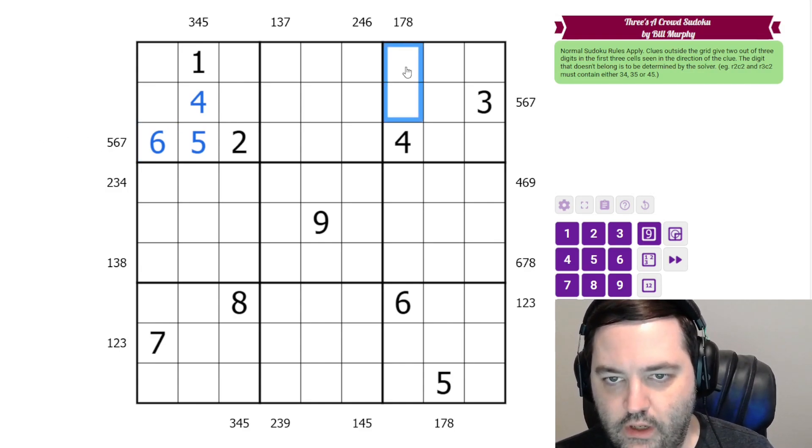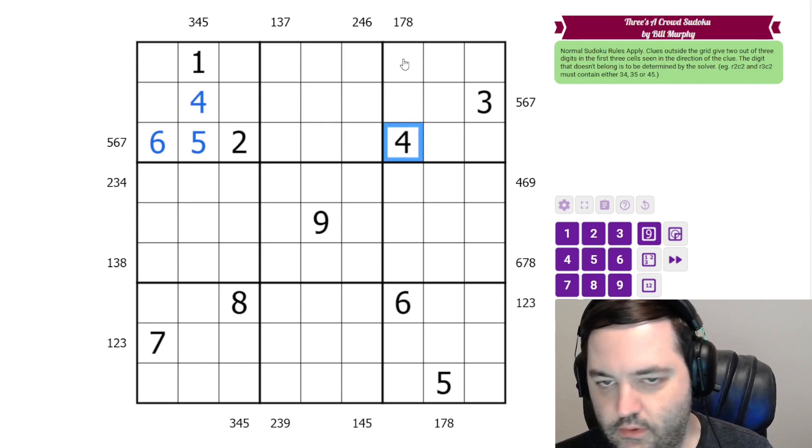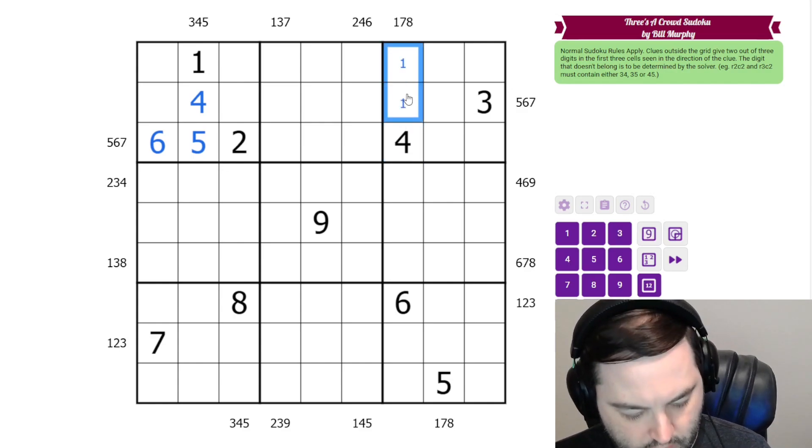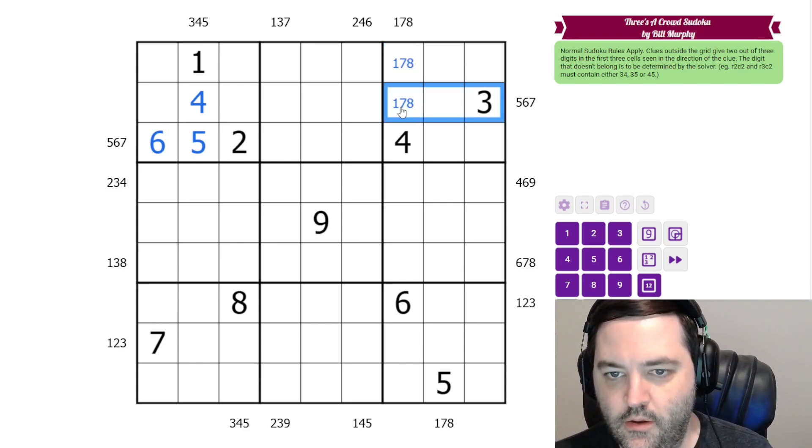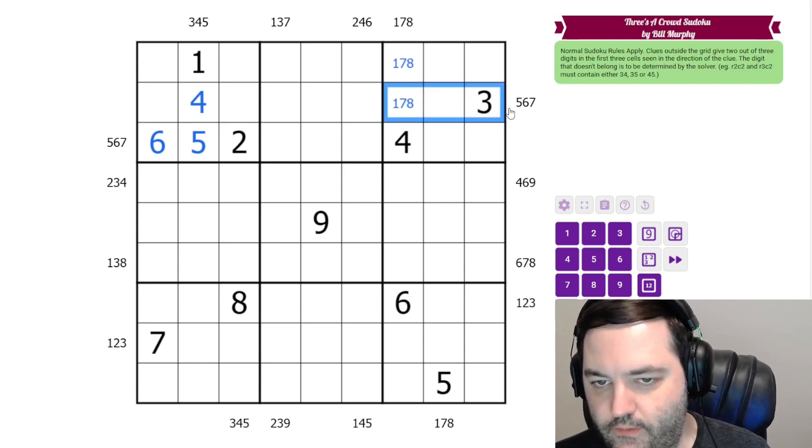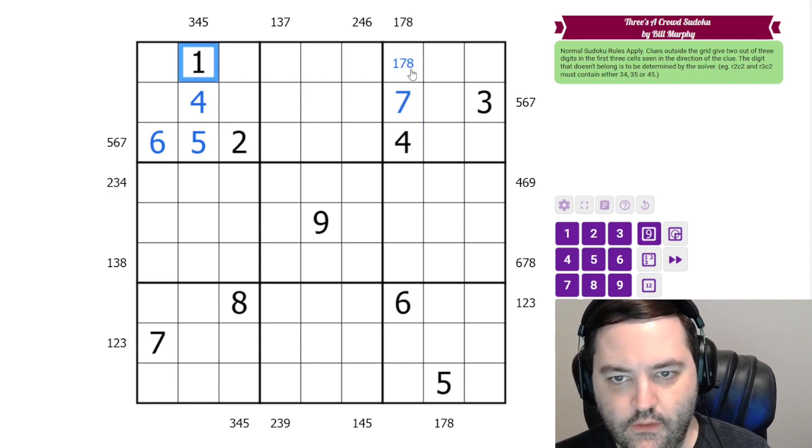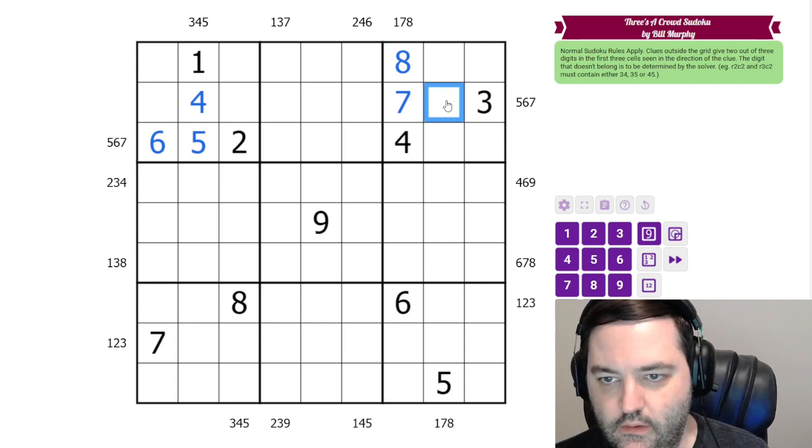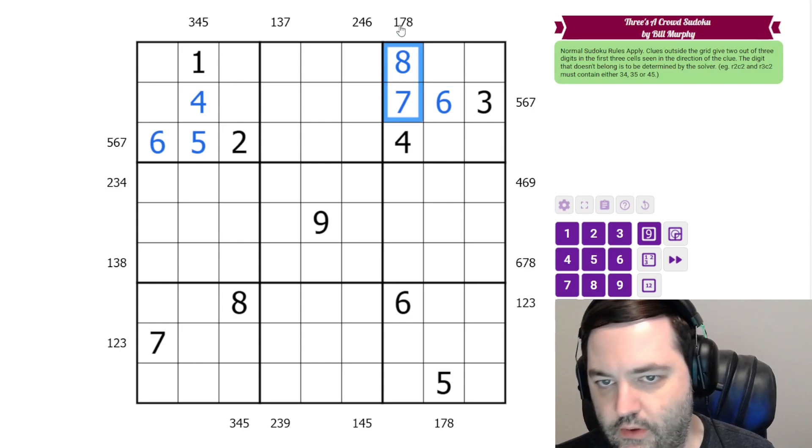Here we need one, seven, eight. We need two of them in these three cells. There's a four here, so these are from one, seven, eight. But here we need two digits from five, six, seven. The only digit that can go here is seven. And this can't be one, so this is eight. And then this can't be five, so this is six. So we have six and seven for this clue. We have seven and eight for this clue.